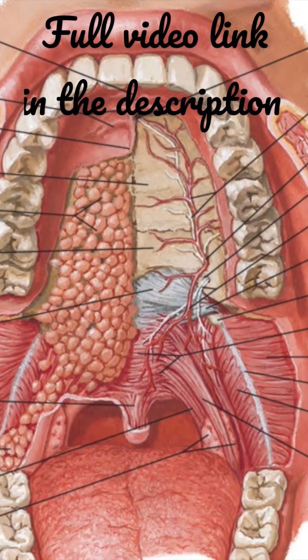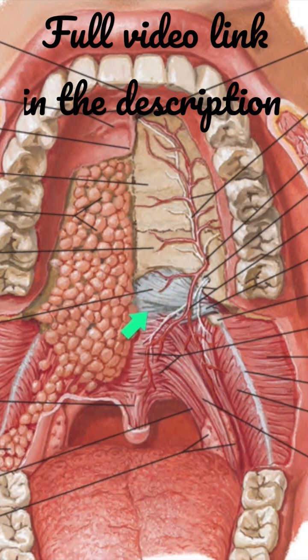In the middle, the palatine aponeurosis splits to enclose the muscle called the musculus uvulae.